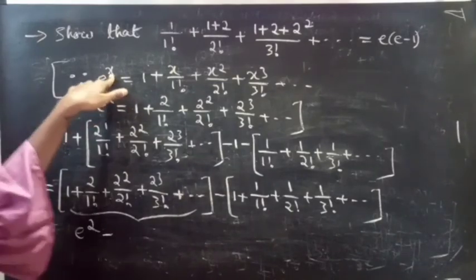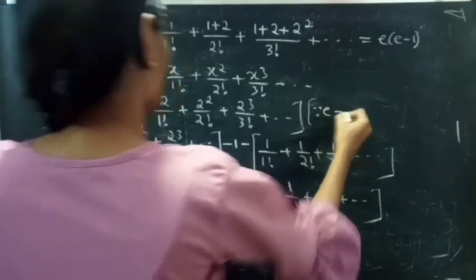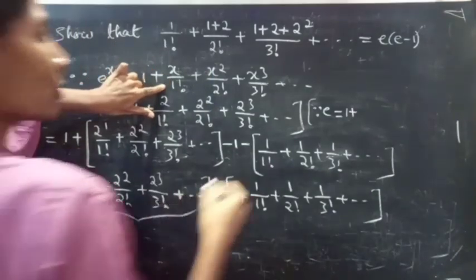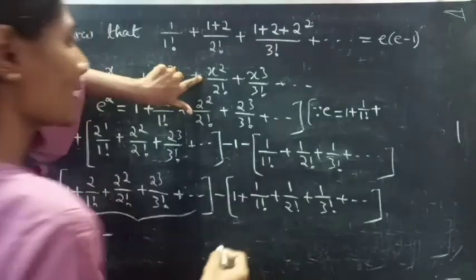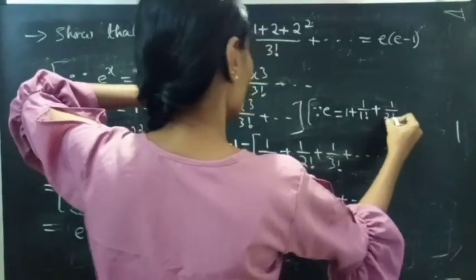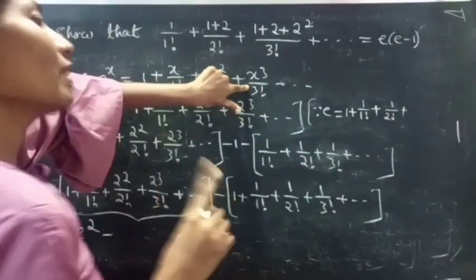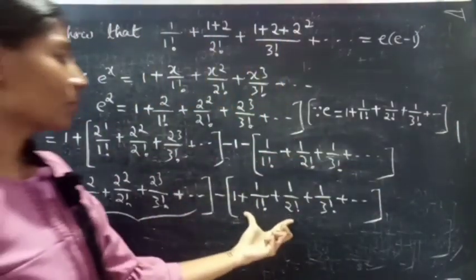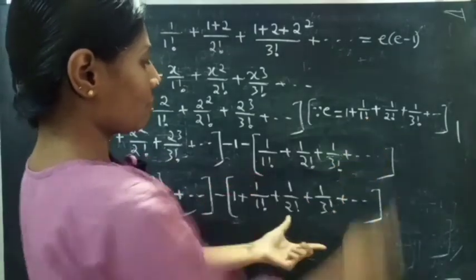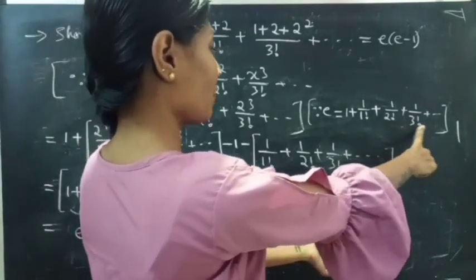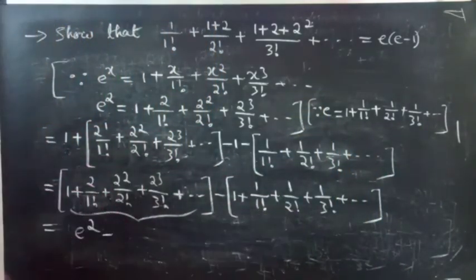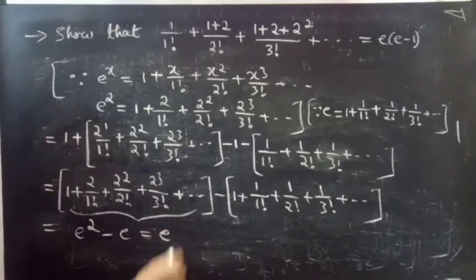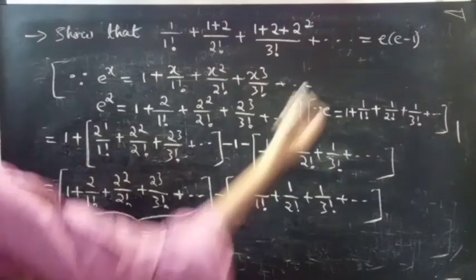If you substitute x equals to 1 in the e power x formula, you get e equals to 1 plus 1 by 1 factorial plus 1 by 2 factorial plus 1 by 3 factorial plus so on. So the second bracket equals e. Therefore you get e squared minus e, which gives e into e minus 1, which is the required result.